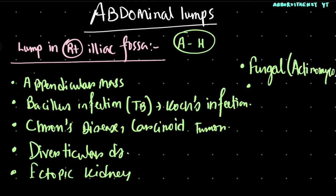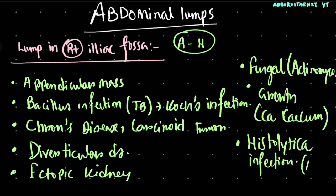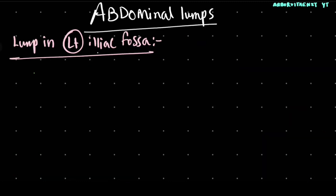There may be presence of a growth, like in carcinoma of the cecum. There may be histolytica infection, that is amoebic infection. So these are the differentials for a lump in the right iliac fossa. Now, if the lump is present in the left iliac fossa.